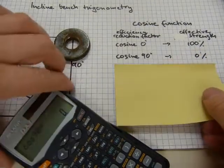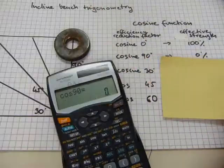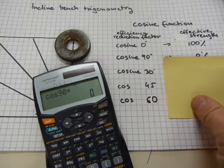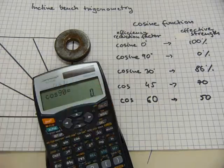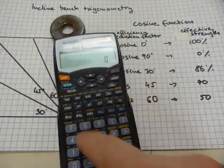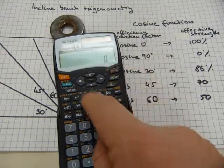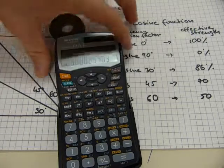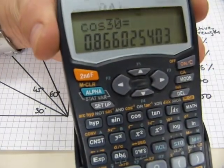The rest of the angles—the cosines of them—are thirty, forty-five, and sixty degree cosines are those numbers. If you enter cosine thirty—sorry, cosine, not sine—cosine thirty, you get zero point eight six six out of it.